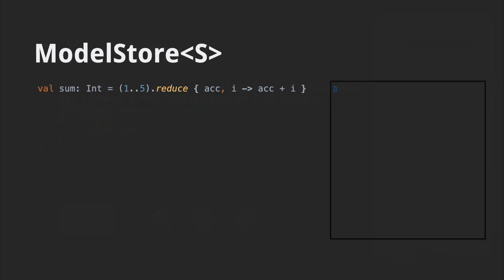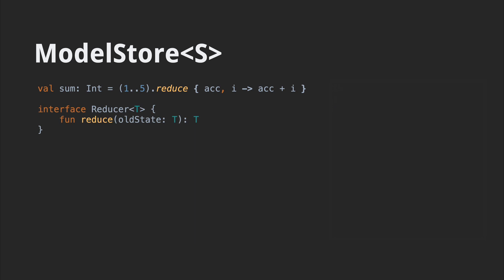Moving on to a key reactive pattern: the model store pattern. At its core, it's a specialized version of the reducer pattern you can find in a lot of collection libraries. Here's a simple Kotlin example. On execution, this will sum up the numbers in the provided range. One of the key ideas of the model store is the use of a reducer. Reducers here are basically single functions that take an old state as input and return a new state. They are intended to be functional in nature — no state of their own, they're idempotent, all that good stuff.